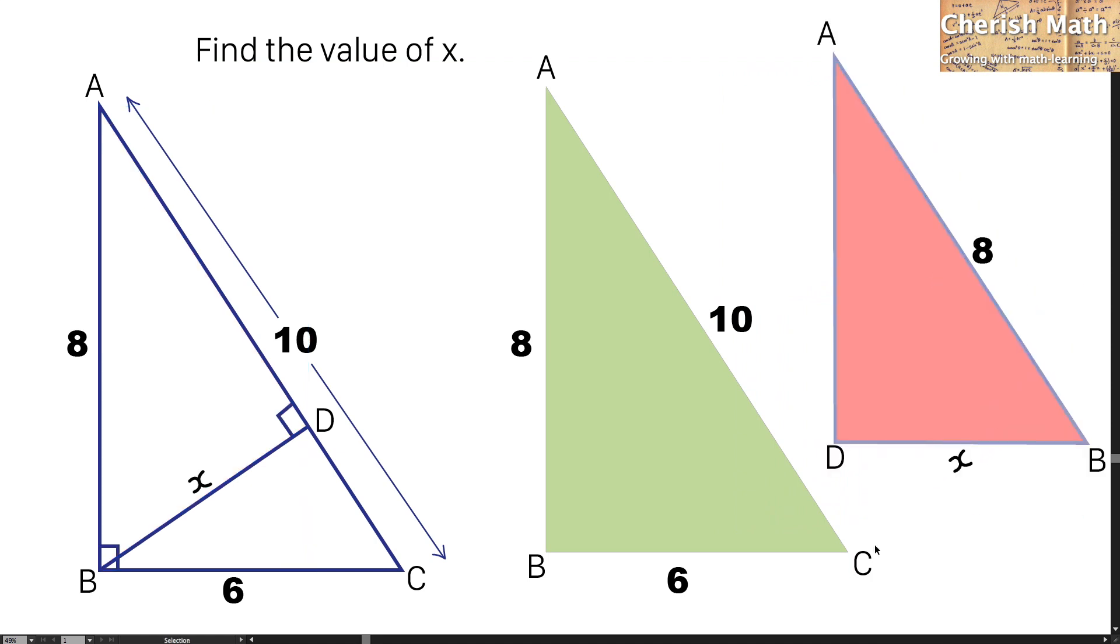Now, by using the concept of similarity, I can confirm that triangle ABC in green and triangle ADB in red are similar to each other. By using the scale factor of length AC, which is 10 units,